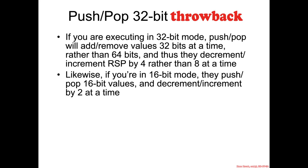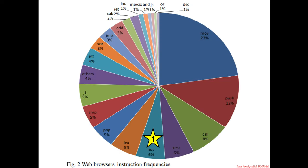A quick throwback to the 32-bit world: even though this class is about 64-bit assembly, push and pop in 32-bit mode add and remove 32-bit values at a time rather than 64 bits, and thus increment or decrement RSP by 4 rather than 8. Similarly, in 16-bit mode — which Intel still supports for backwards compatibility — it's two bytes at a time instead of four. So now we know three assembly instructions: nop, push, and pop.